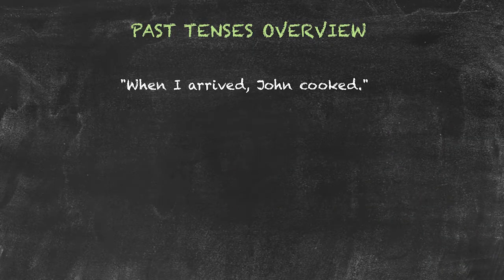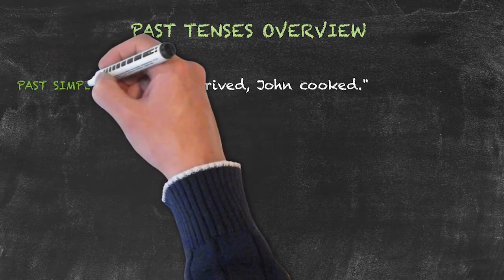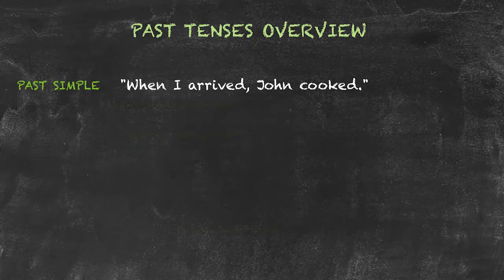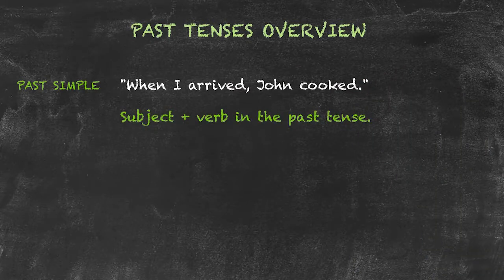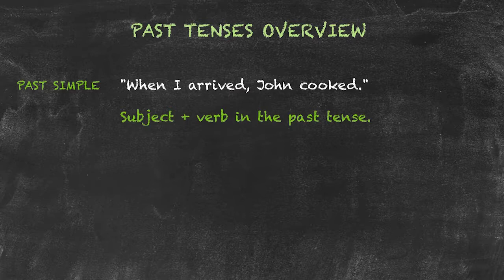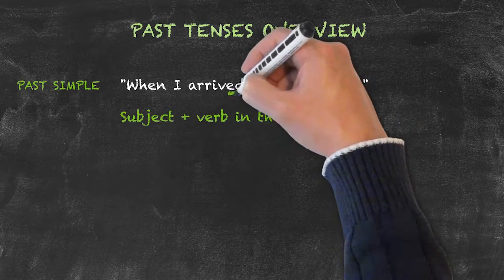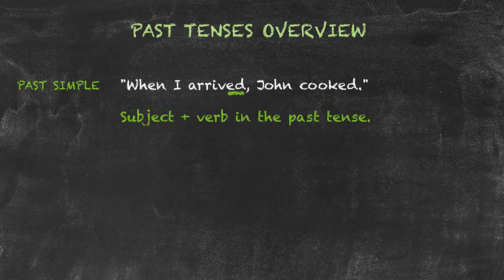In the first example, when I arrived, John cooked. John cooked is the past simple. The structure is quite simply the subject plus verb in the past tense. The past tense verb is usually formed just by adding -ed to the end of the base form.